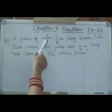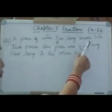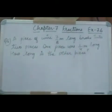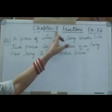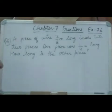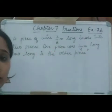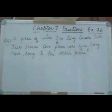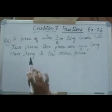Now the next question: a piece of wire 7/8 meter long broke into 2 pieces. The total length is 7/8 meter. It is broken into 2 parts, and the length of one part is 1/4 meter. You have to find the length of the other piece.